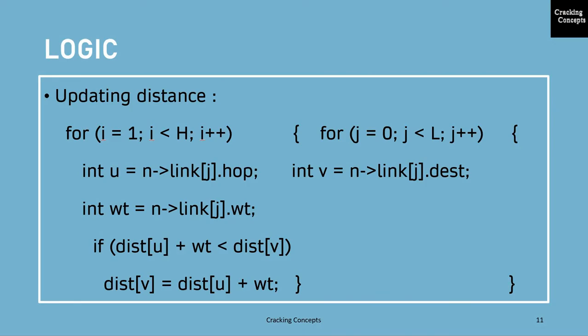Next process is the updation of distance. For this, two loops are needed. The outer loop will work based on the number of hops and the inner loop will have the number of links as its limit.